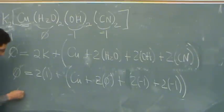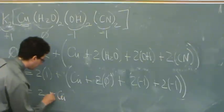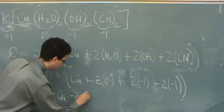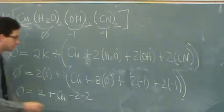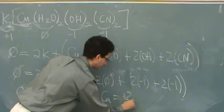So I just solved. Zero is equal to two plus copper, minus two, minus two. So copper is going to equal what? Copper equals plus two, there's your answer.